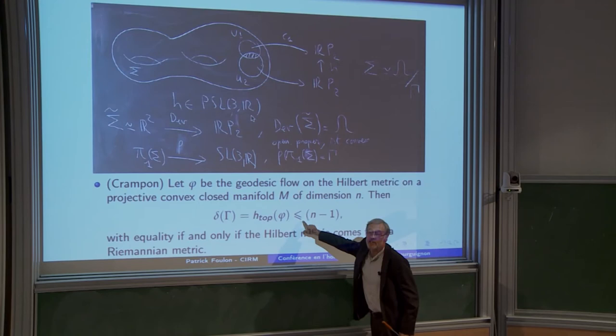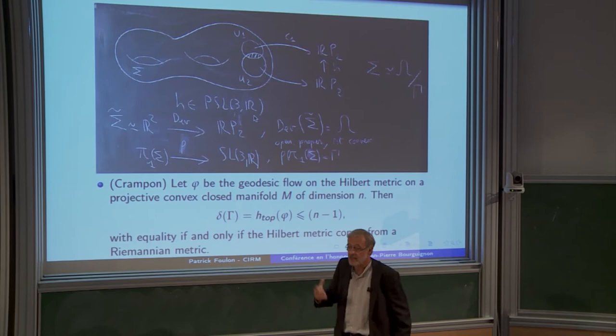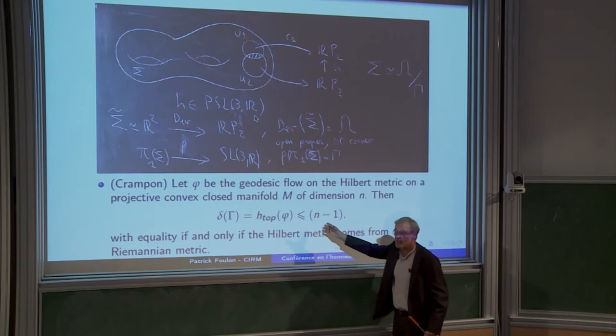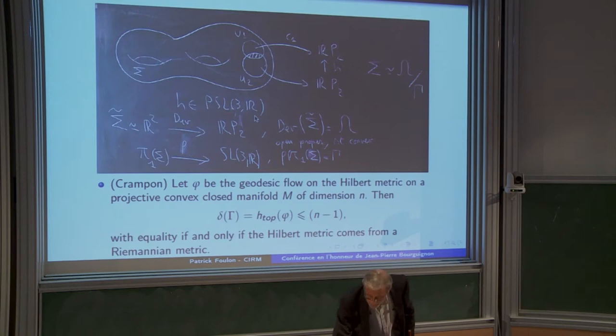Well, for the Riemannian surfaces, it's not so, I mean, it's very interesting. But you have equality. So if you go on the Teichmüller space, you have equality. This number doesn't change. But if you go to projective structures, real projective structures which are not Riemannian, then it's strictly smaller than n minus 1.